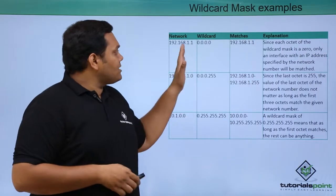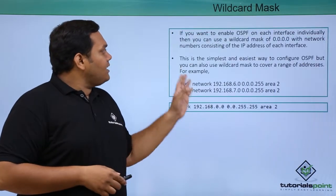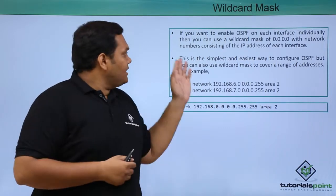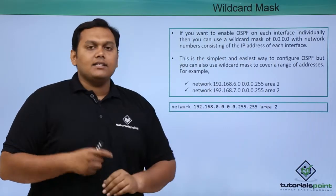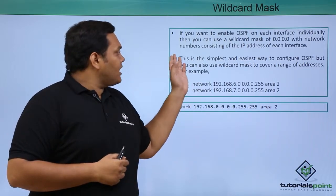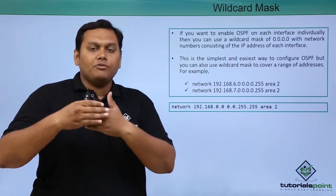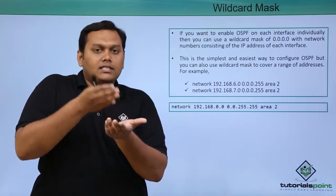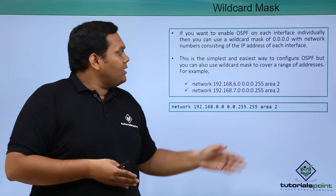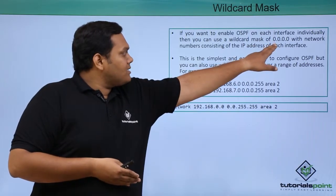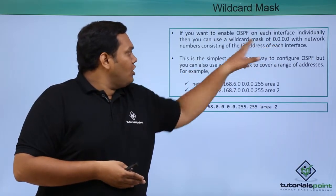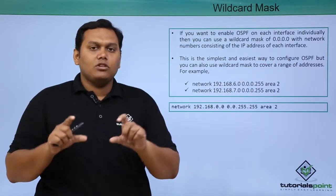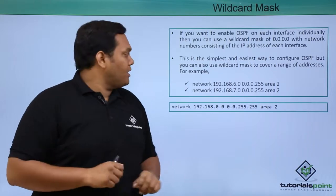This is how the wildcard mask is formed. If you enable OSPF on each interface individually, you can use wildcard mask 0.0.0.0 with the network number consisting of the IP address of each interface. That means each interface IP address is also mentioned as the network number.